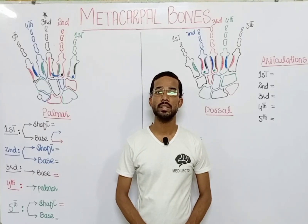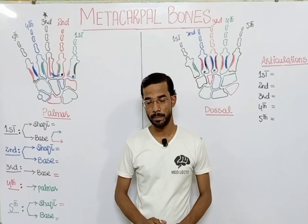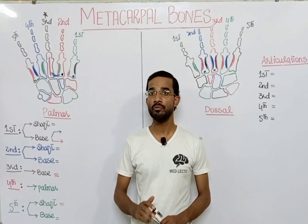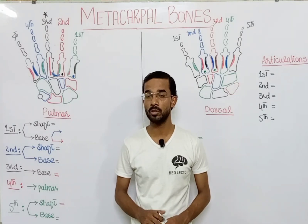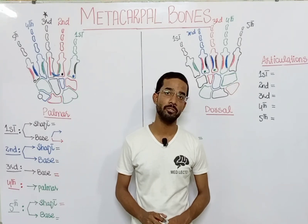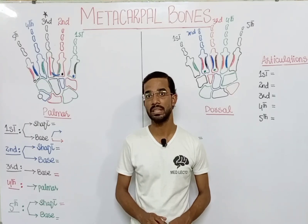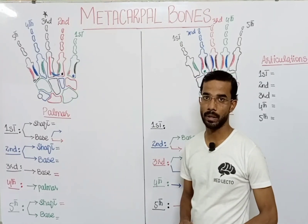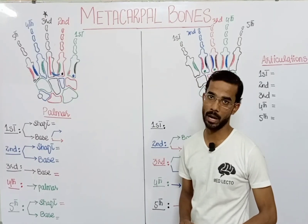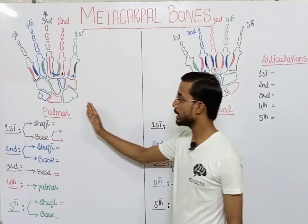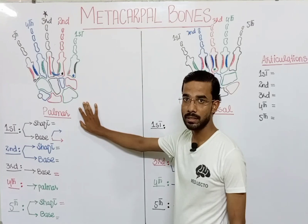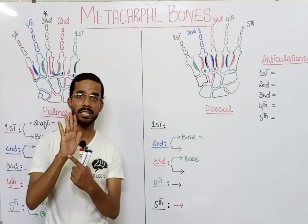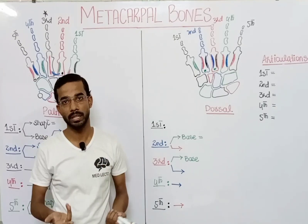Welcome to Medillac Talk. Today we are going to discuss a very interesting topic: the attachments and articulations of the metacarpal bones. We will discuss the different muscle attachments to the metacarpal and then the articulations with different bones. We discuss both aspects of the metacarpal — the dorsal aspect and the palmar aspect. The palm side is called the palmar aspect and the opposite is the dorsal.